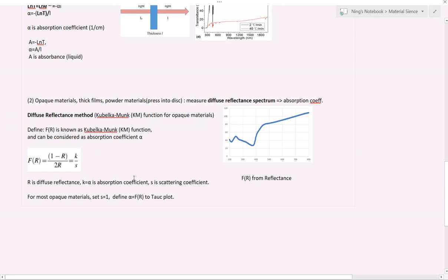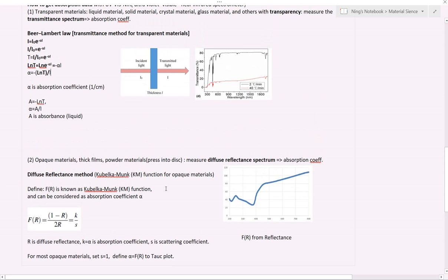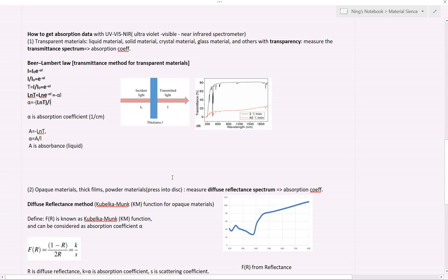For this method, usually it will give two columns. The first column is the wavelength. The second column is the reflectance. Now we know how to measure the optical absorption coefficient. One way is to use the transmittance method. The second way is to use diffuse reflectance method.